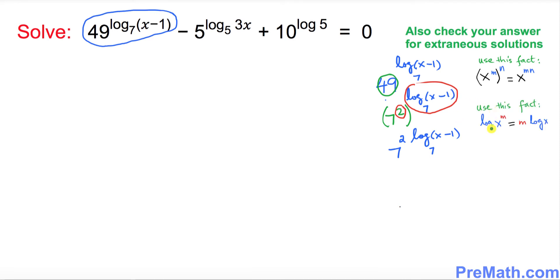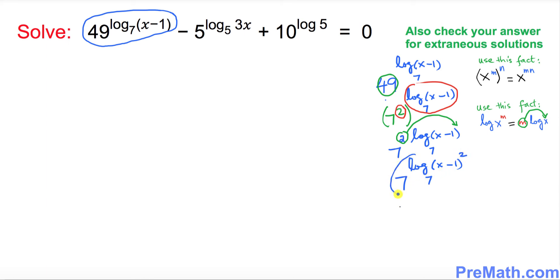The next rule we'll use is: if you have a log of x with an exponent m, that m can be moved to the top as an exponent of x. So this 2 can be written as an exponent, giving us 7 to the power of log base 7 of (x minus 1) squared.